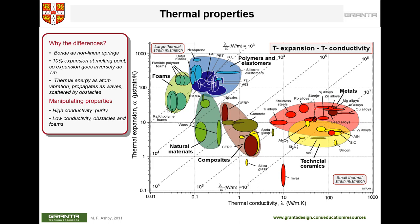Similarly, we can look at thermal properties. The two most common ones are thermal expansion — how much a material shrinks or expands when heated — and thermal conductivity — how heat transfers through the material. For most applications, we want low thermal expansion unless designing an actuator that functions on expansion and shrinking. Conductivity requirements depend on whether the application needs conduction or insulation.